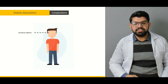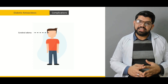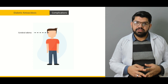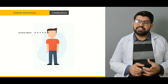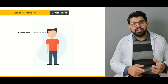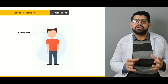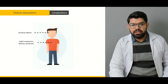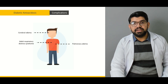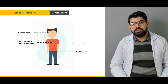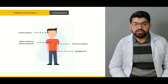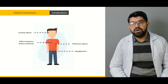Complications of DKA management: Cerebral edema is due to rapidly decreasing serum osmolality; massive insulin infusion can cause cerebral edema. DKA is a very life-threatening emergency and treatment must be given within certain ranges so the patient does not further deteriorate. Adult respiratory distress syndrome and pulmonary edema with acute myocardial infarctions are also complications. Hypoglycemia — by far due to excessive insulin use — is a very common complication in patients presenting with DKA treatment.